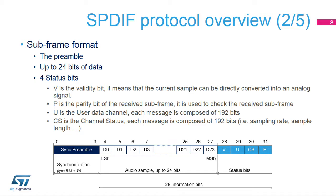An SPDIF frame contains two subframes. Each subframe contains 32 bits divided into three fields: a synchronization preamble allowing the detection of block and subframe boundaries, a payload of 24 bits, and status bits V, U, C, S, and P.